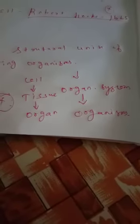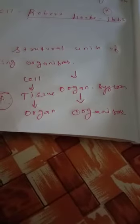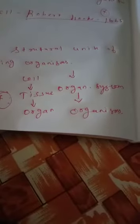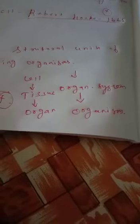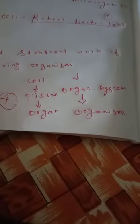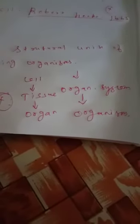An organism may have several organ systems to perform multiple functions. So remember this hierarchy: cell, tissue, organ, organ system, and organism.